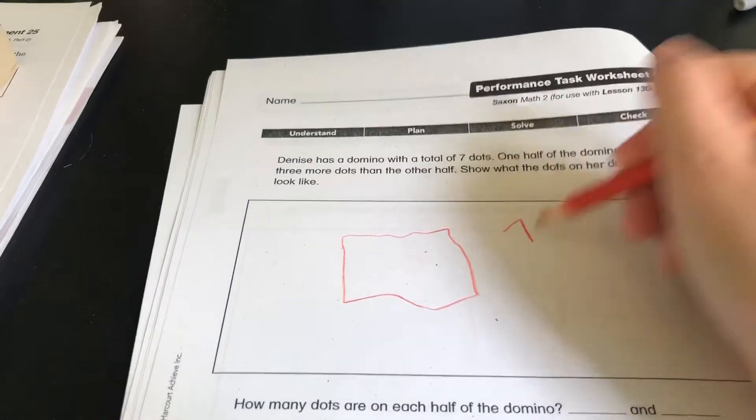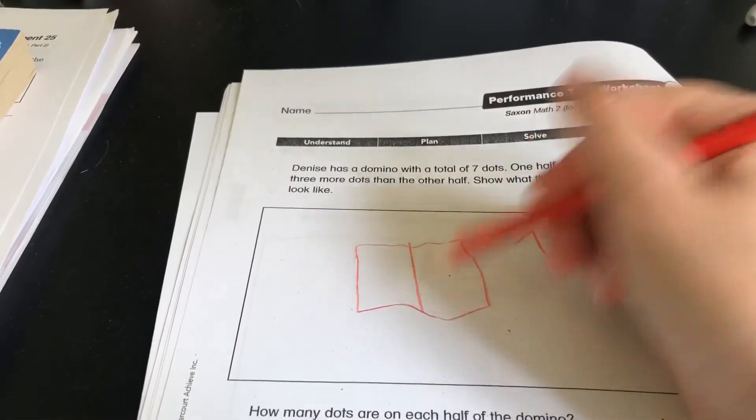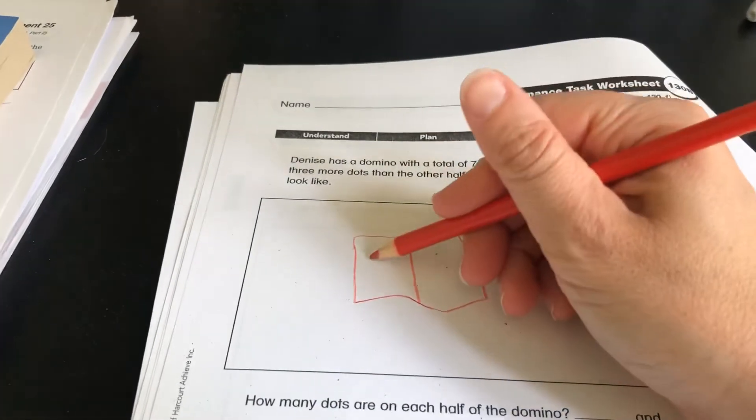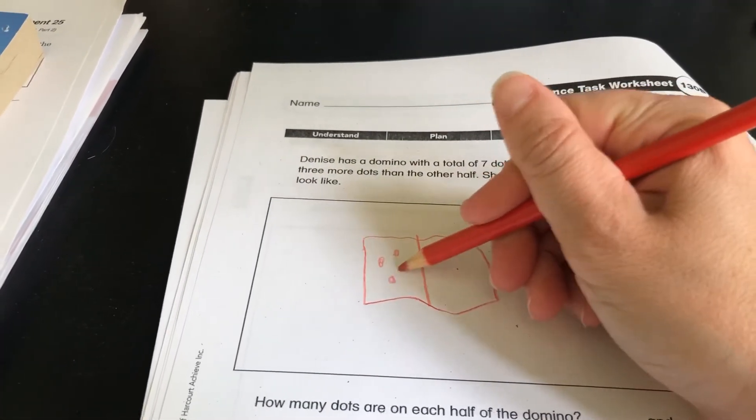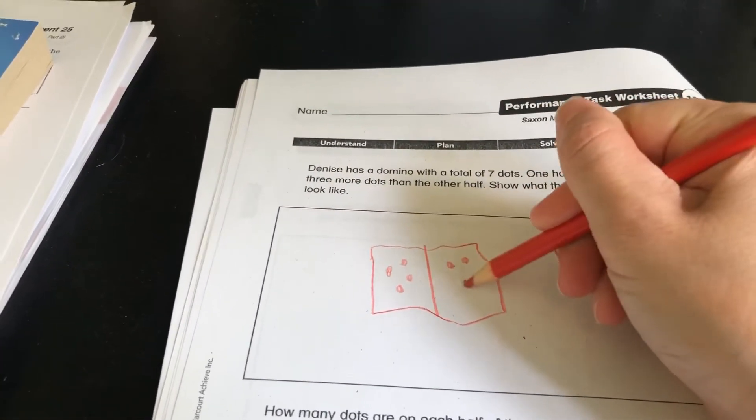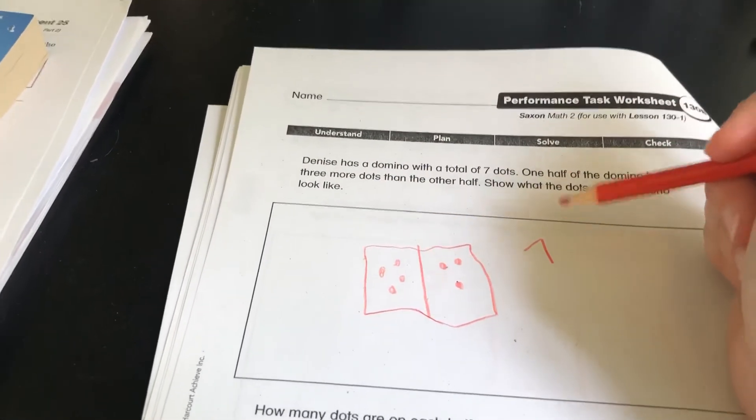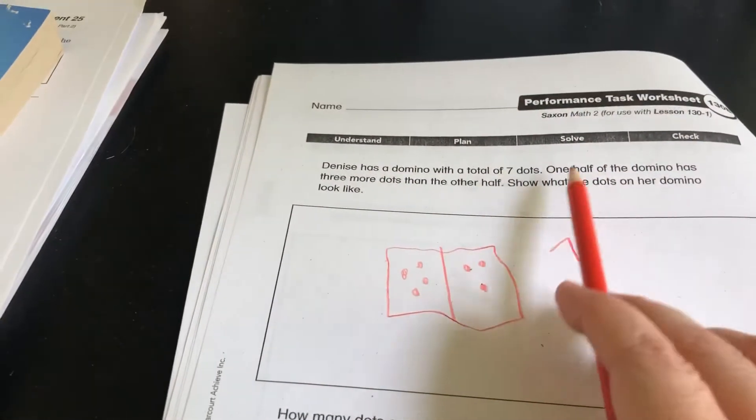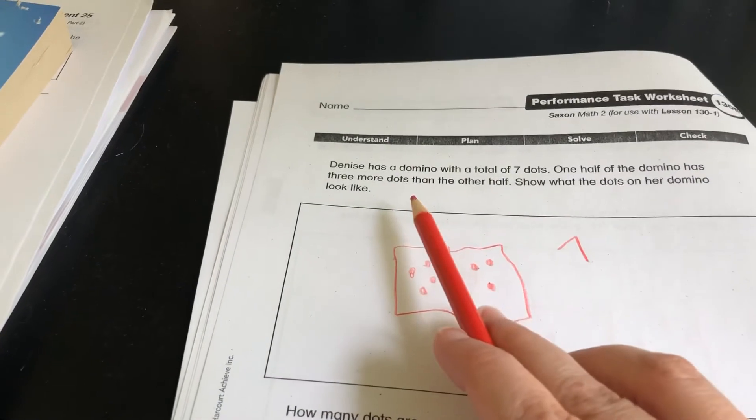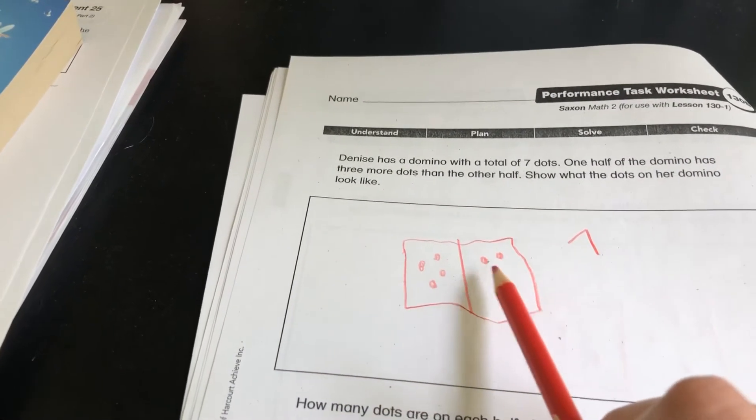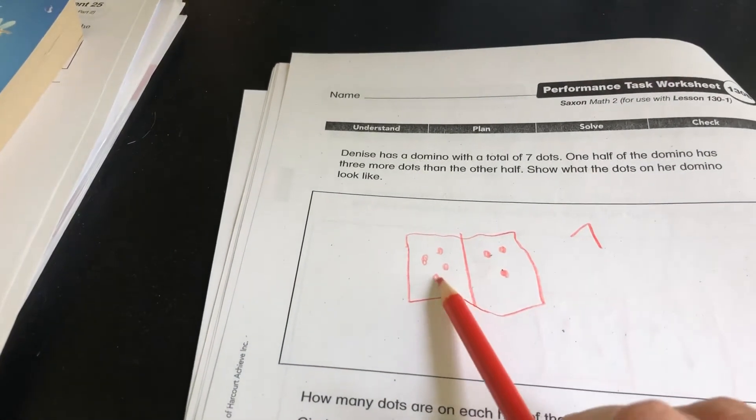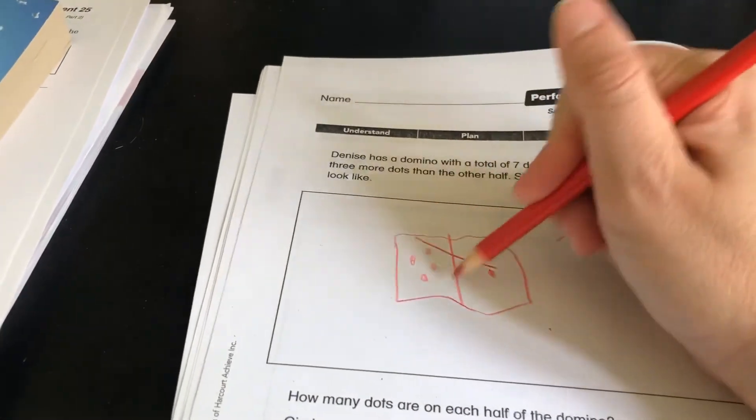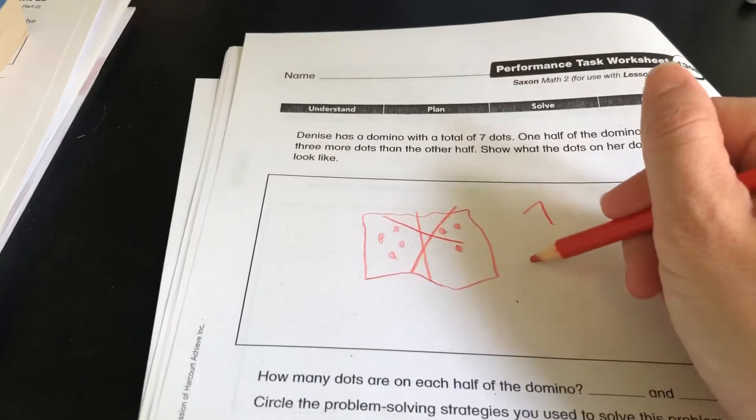And we're trying to get to the number seven. So how can we make the number seven? Well, I could do four and three. And that adds up to seven. But it says one half of the domino has three more dots than the other half. This only has one more dot. So, sorry, messy domino, you're not right.